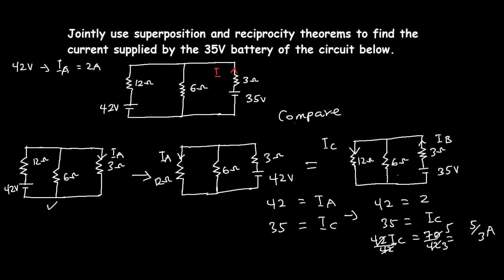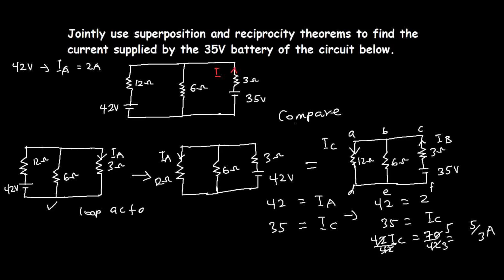Now we use IC to find the branch current IB. To do this, I'll consider a loop in the circuit, labelling the nodes A, B, C, D, E, F. I'll consider loop A-C-F-D-E. Following this loop, the 6-ohm resistor is not included, and we can use this loop to find IB.